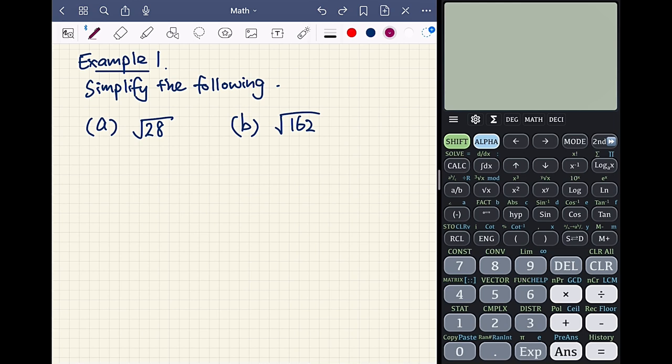We know that square root of 28 can also be written as square root of 4 times 7. Applying property 1, we can split this into square root of 4 times square root of 7. And since square root of 4 is actually 2, we can write our final form as 2 root 7.